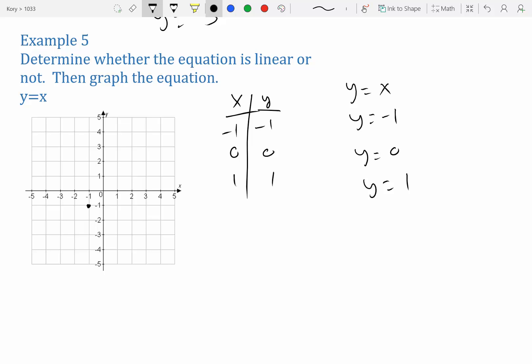Negative 1, 1. 0, 0, also known as the origin. And 1, 1. Yes, this is linear. It creates a nice line. That's it for section 3.1.